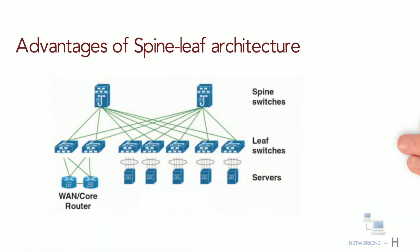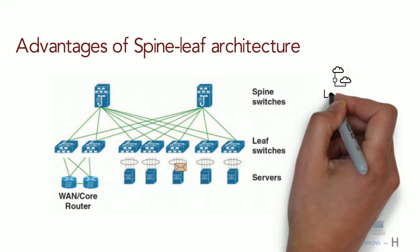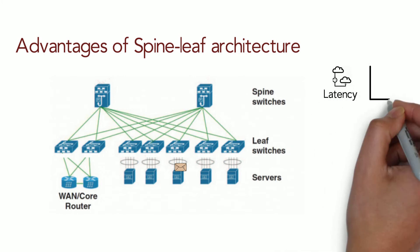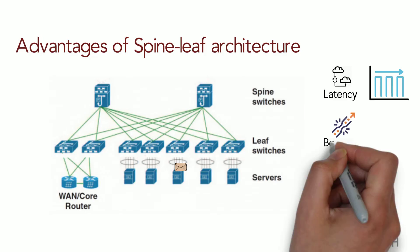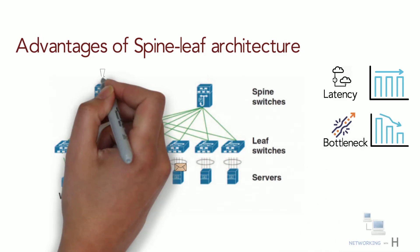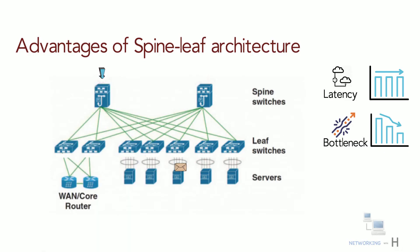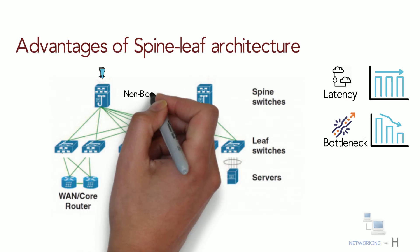With a spine and leaf architecture, no matter which leaf switch a server is connected to, it has to cross the same number of devices every time it connects to another server. The only exception is when the other server is on the same leaf. This approach keeps latency at a predictable level and minimizes bottlenecks because a payload only has to hop a spine switch and another leaf switch to reach its destination. Each leaf connects to all spines with no interconnections among neither spines themselves nor leaves, which creates a large non-blocking fabric.